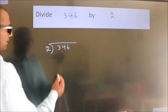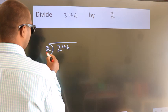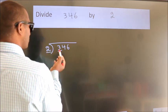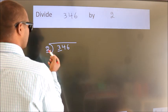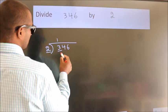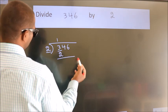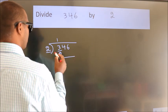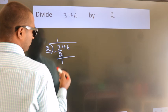Next, here we have 3, here 2. A number close to 3 in the 2 table is 2, which is 1 times 2. Now we should subtract. We get 1.